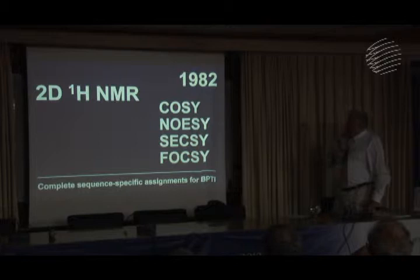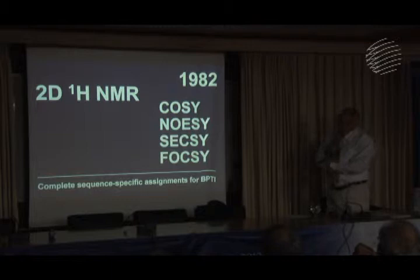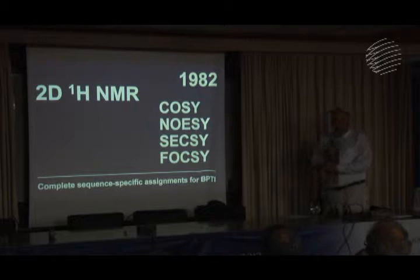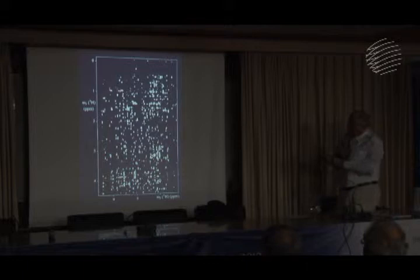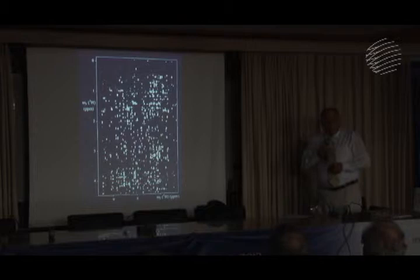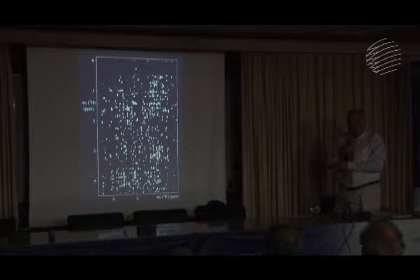Two-dimensional NMR had brand names: COSY for correlated spectroscopy, NOESY for nuclear Overhauser enhancement spectroscopy, SEXY for spin echo correlated spectroscopy, and FOXY for fold-over corrected spectroscopy. Using these abbreviations shortened papers by about one page — or ten pages. Looking at the spectra, an early NOESY spectrum showed information that was previously hidden in the central part of the one-dimensional spectrum, and you can appreciate that this is a lot of information. The next point was to find mathematical methods to derive the three-dimensional structure from this kind of spectrum.